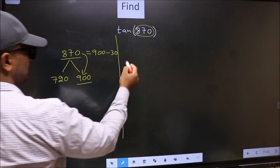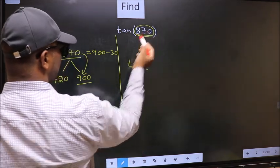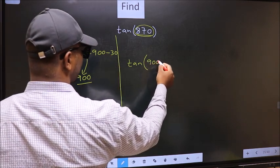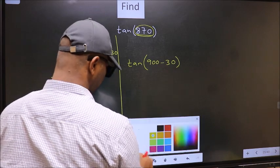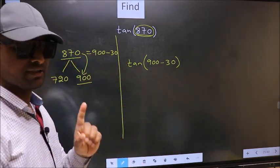So this will become tan(870°), which we now write as tan(900-30). This is your step 1.